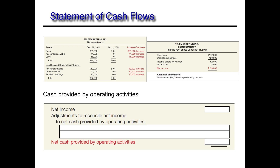We want to adjust — remember, in the operating activity section we are analyzing all the current assets, all the current liabilities, depreciation, and gains and losses. So that's what we need to look for. We'll start with net income and bring it down into the statement of cash flows, then adjust for all current assets, current liabilities, depreciation, and gains and losses.